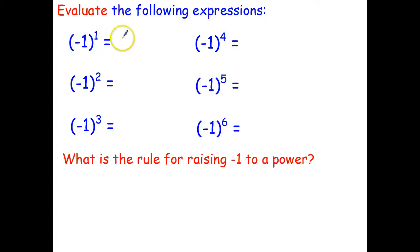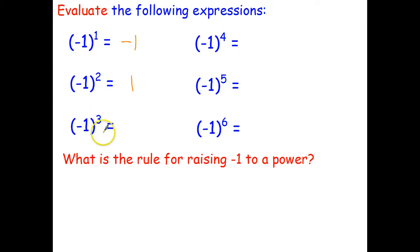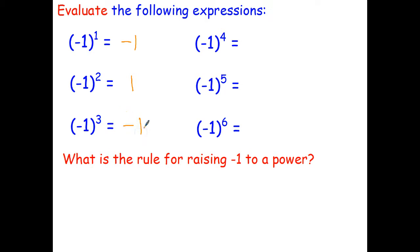Any number to the power of 1 is just the number itself. Negative 1 times negative 1 — you should know how to multiply positive and negative numbers. A negative multiplied by a negative is a positive, so that becomes positive 1. Here we have negative 1 times negative 1 times negative 1. Well, negative 1 times negative 1 is 1, times negative 1 becomes negative 1.